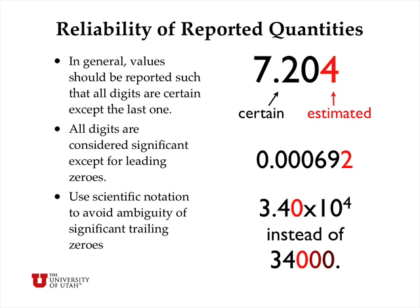With large numbers, trailing zeros can create ambiguity about the number of significant digits. For example, with 34,000, you wouldn't know whether the 4 or one of the zeros is the uncertain digit. To eliminate this ambiguity, it's preferred to use scientific notation. This value should be reported as 3.40 × 10⁴, indicating three significant figures: the 3 and 4 are certain, and the 0 may be uncertain by one or two digits.